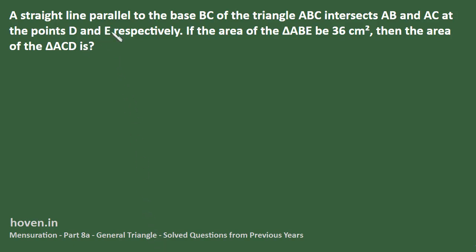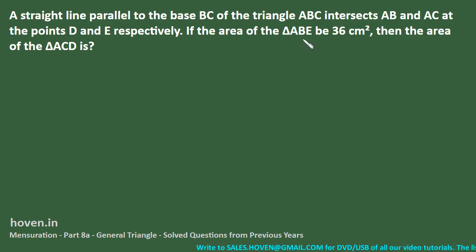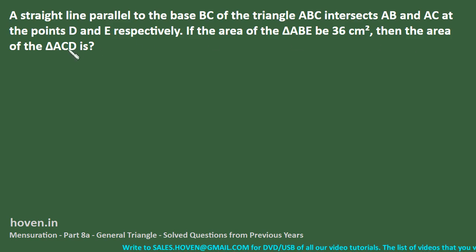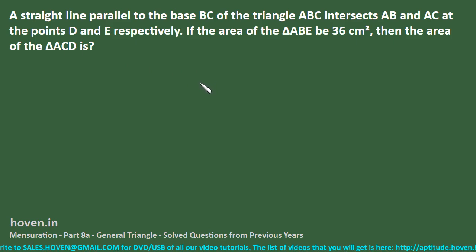A straight line parallel to the base BC of triangle ABC intersects AB and AC at points D and E respectively. If the area of triangle ABE is 36, then what is the area of triangle ACD? We will have to draw a schematic for this first.